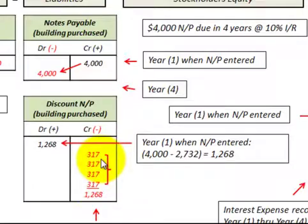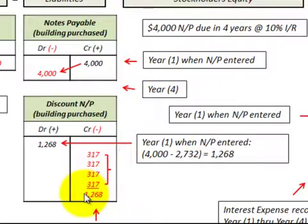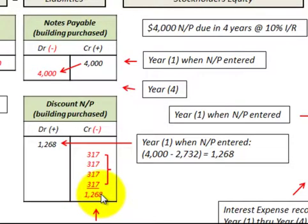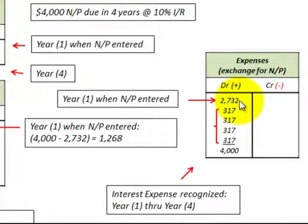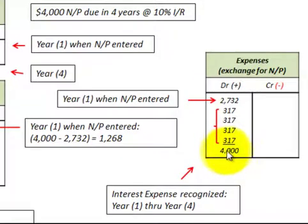Each of the four years, we record interest expense as a reduction to the discount on notes payable. The $317 per year was calculated by dividing $1,268 by four — that's the straight-line method. At the end of the fourth year, the discount on notes payable is zero: the $1,268 debit less the $1,268 credit. We record interest expense of $317 for each of the four years. Adding the initial present value of $2,732 to the total interest gives us $4,000 on our notes payable.